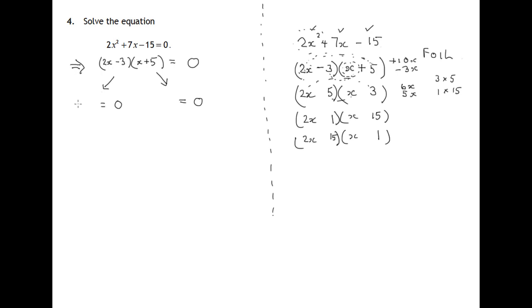2x minus 3 might be 0, or x plus 5 might be 0. When you have two numbers, a times b equals 0, then either a is 0 or b is 0. And one or other or maybe both are 0.